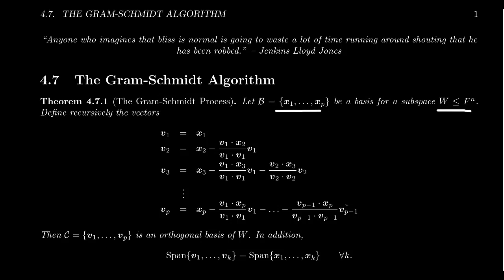And so we just replicate — we repeat this process over and over recursively. V4 will be X4 subtract the orthogonal projection of X4 onto V1, V2, V3. V5 will be X5 subtract the orthogonal projection of X5 onto V1, V2, V3, V4. We keep repeating this until we get to the last vector VP, for which we take XP subtract from it the orthogonal projection of XP onto V1, V2, V3, V4, all the way down to V(P−1).